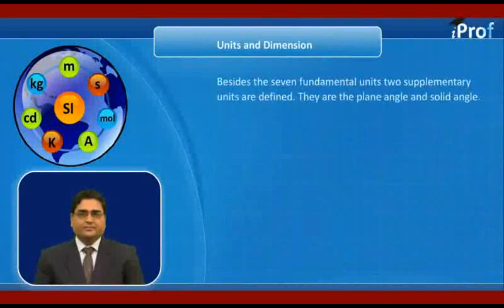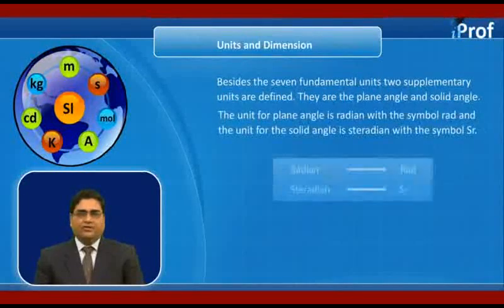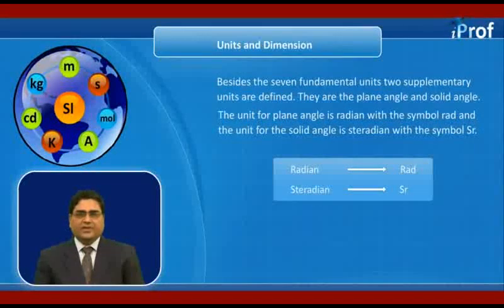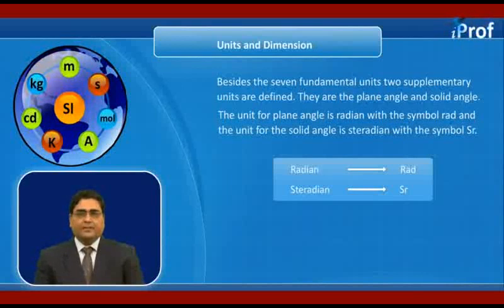Besides the seven fundamental units, two supplementary units are defined. They are the plane angle and solid angle. The unit for the plane angle is radian with the symbol RAD, and the unit for the solid angle is steradian with the symbol SR.